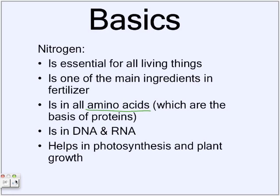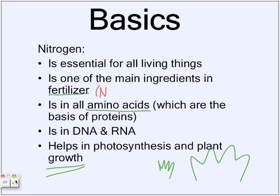Nitrogen helps in photosynthesis and enhances plant growth — a plant with a good amount of nitrogen grows much better. That is why it is used in artificial fertilizers and even organic fertilizers. There are three main ingredients of artificial fertilizer: nitrogen (N), potassium (K), and phosphorus (P).